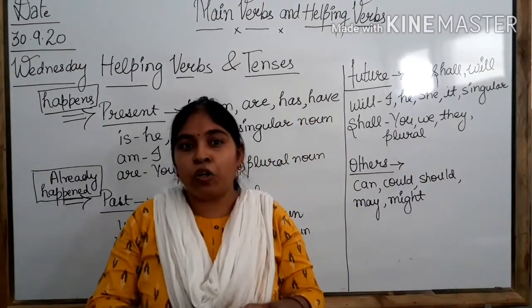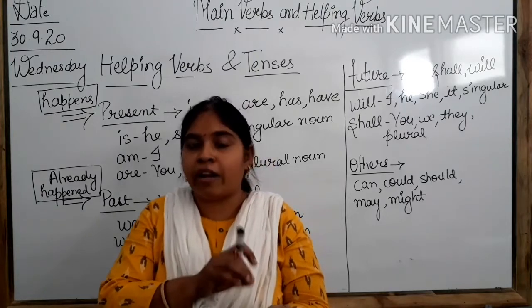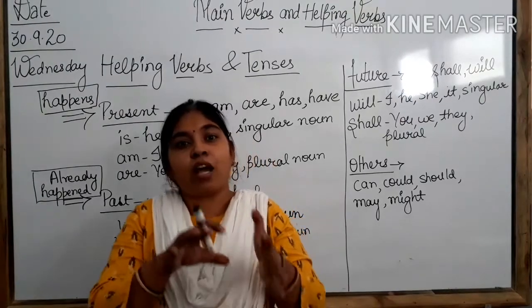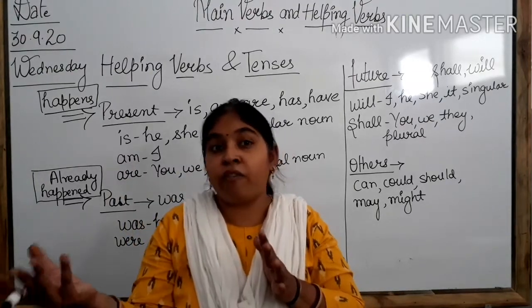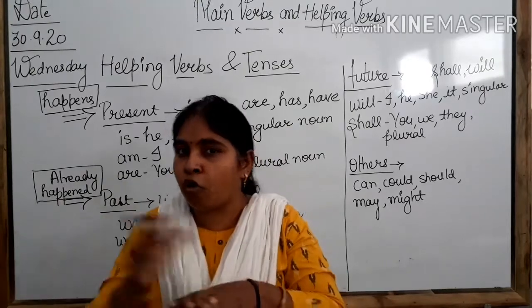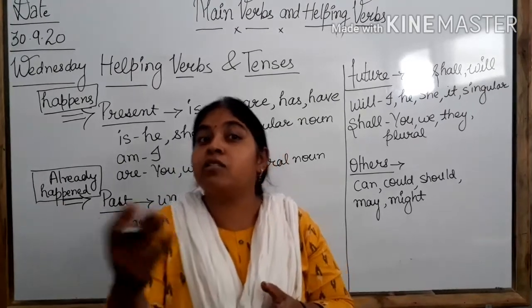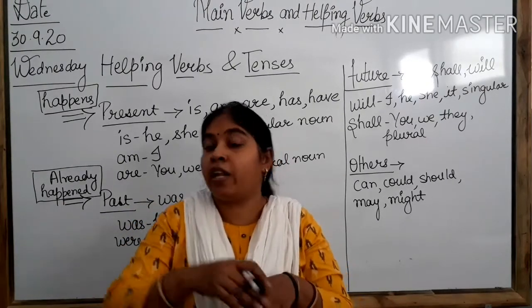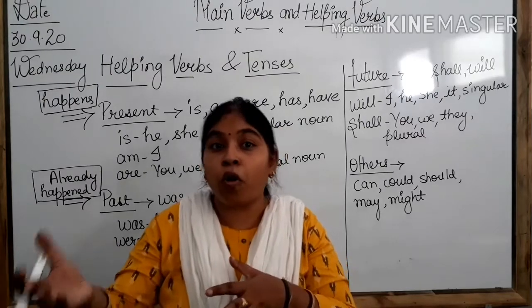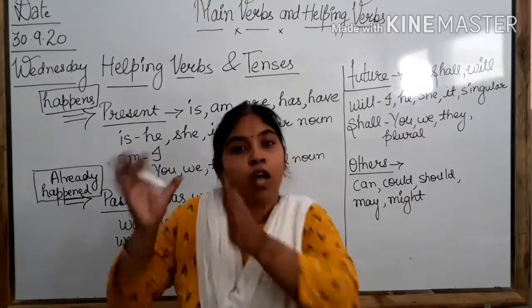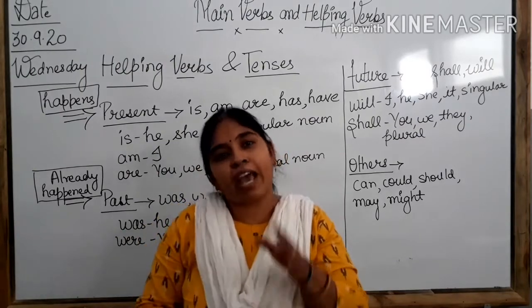Today, whatever things we will do — whatever you will read, whatever you will write, whatever you watch — that all will come under the present tense. And future means the day which will come tomorrow. We don't know anything about tomorrow; no one knows what will happen. So that is the upcoming day. We will plan for the future — at this time we will attend the live classes, do our homework, go to play. So that will come under future tense. So we have these three types of tenses: present, past and future.